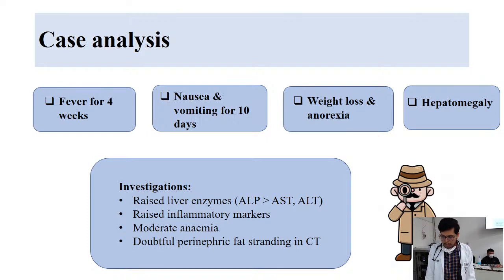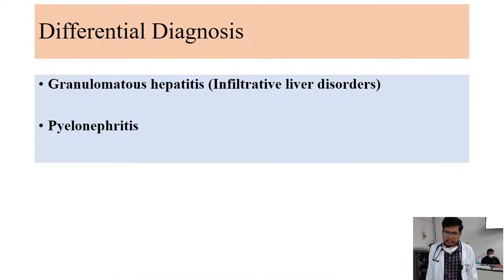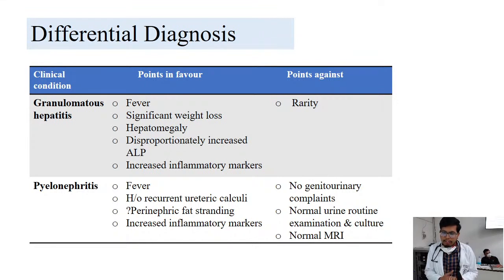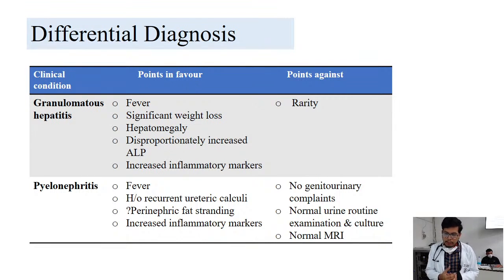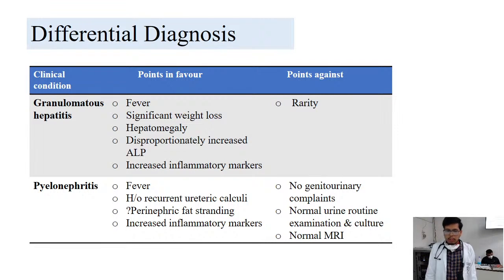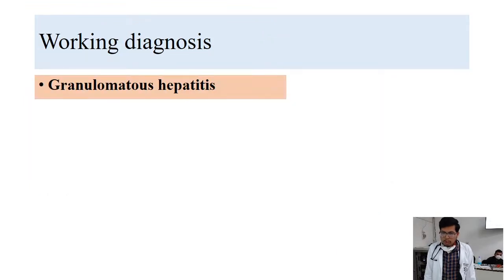Based on these findings, differentials were narrowed to chronic granulomatous hepatitis or pyelonephritis. For granulomatous hepatitis: fever, significant weight loss, hepatomegaly, disproportionately elevated ALP, and elevated inflammatory markers were in favor — though it is a rare entity. For pyelonephritis: fever, history of recurrent ureteric calculi, doubtful perinephric fat stranding, and elevated inflammatory markers were noted, but strong points against were no genitourinary complaints, normal urine routine, normal culture, and normal MR abdomen. Working diagnosis: granulomatous hepatitis.